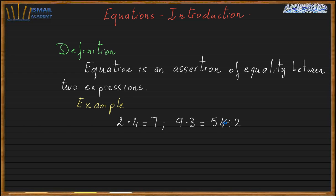So whether it's true or false is not the question. The question is: do we have an expression, another expression, and an equal sign between them? If yes, this is an equation. As you see, the definition was totally clear — it didn't say it is a true assertion of equality. It just states it is a statement of equality between two expressions. That's all.